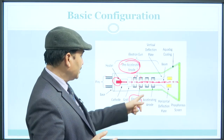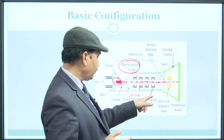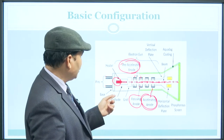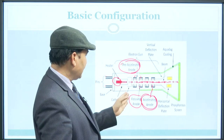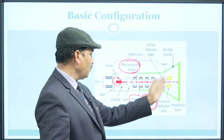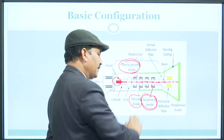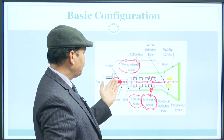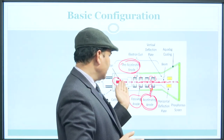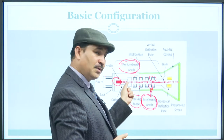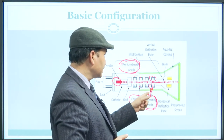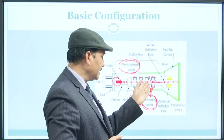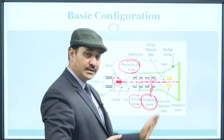These are the focusing anodes that give the electrons direction. For further acceleration, accelerating anodes are also there. The pre-accelerating anode ensures the electrons attain at least a reasonable speed, and the accelerating anodes ensure sufficient speed is gained so that the electrons do not fall before striking the screen.